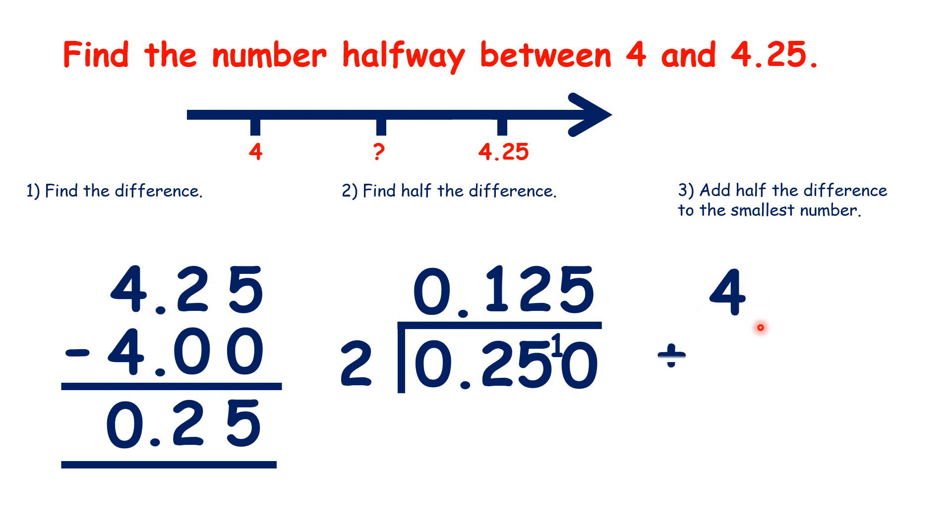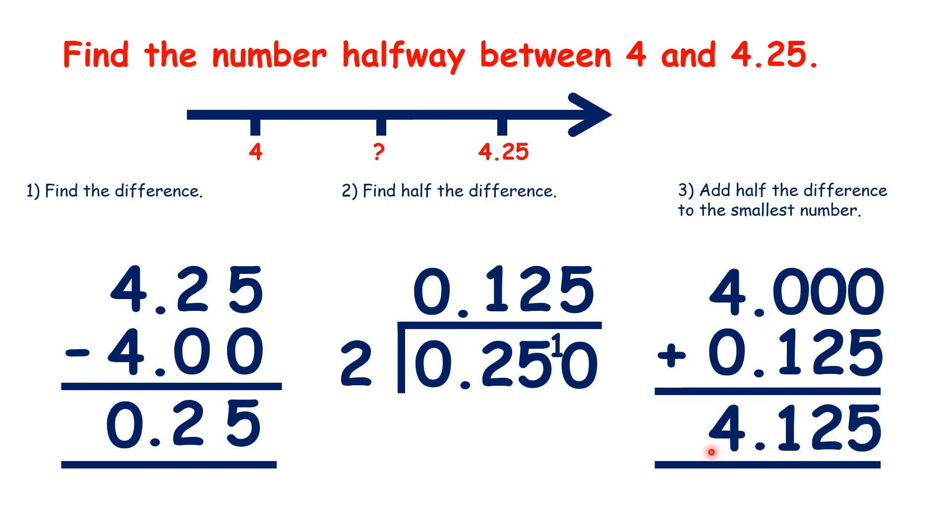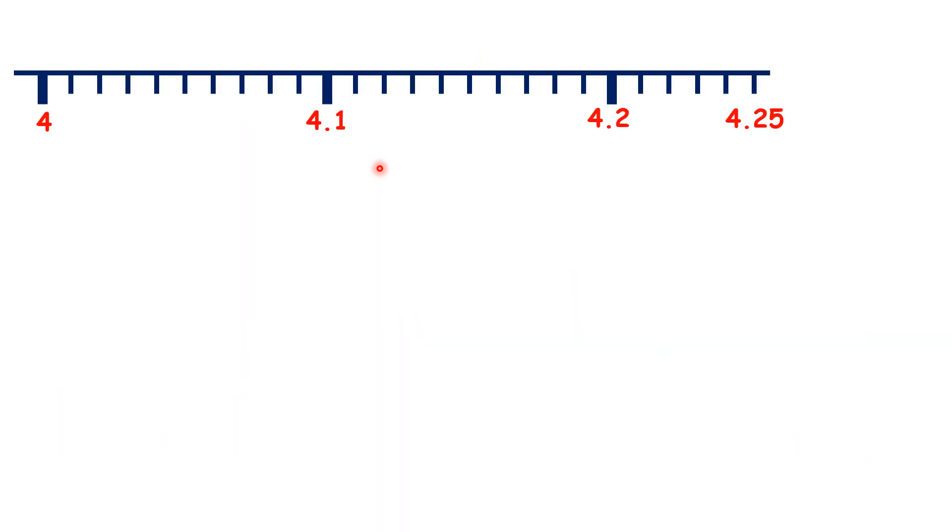Now, we add half the difference to the smallest number. So, 4.125 is right in the middle of 4 and 4.25. Now, the number lines are getting really confusing. There's 4, and there's 4.25, and this is right in the middle.